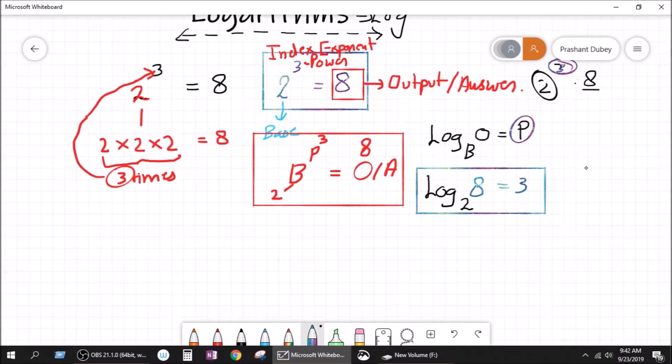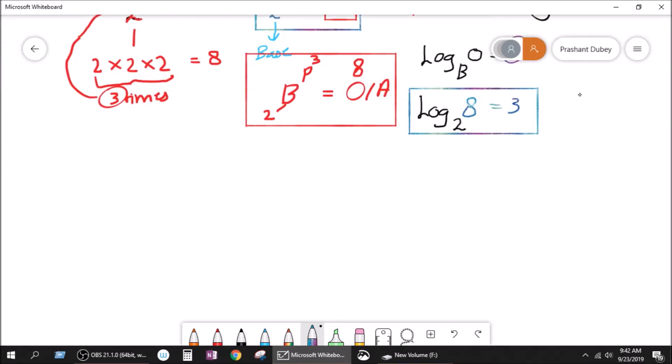Now, let's take another question. Let's take 5 to the power 3 is equal to 125. So again, we have the base, we have the power, and we have output. So how do we write this in the form of log? Log, this number is the base, this number is the output, and this number is the power.